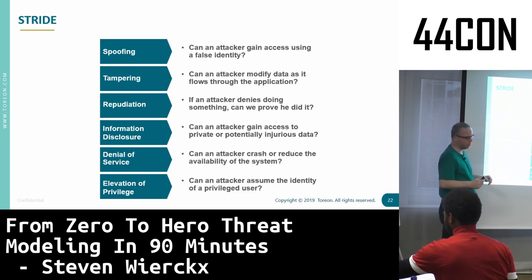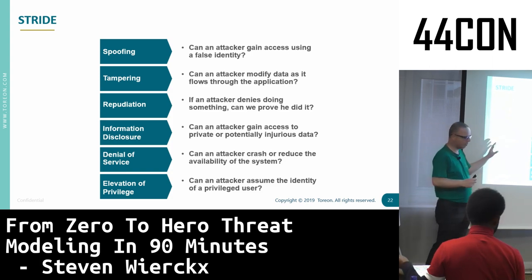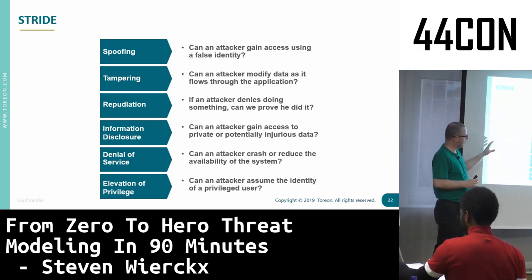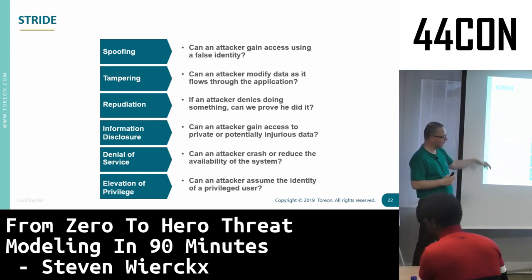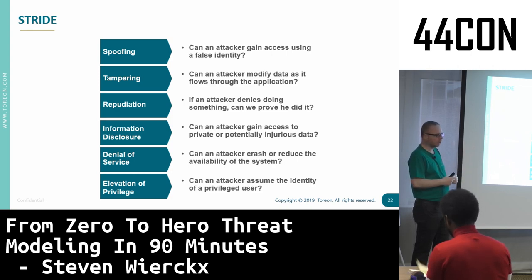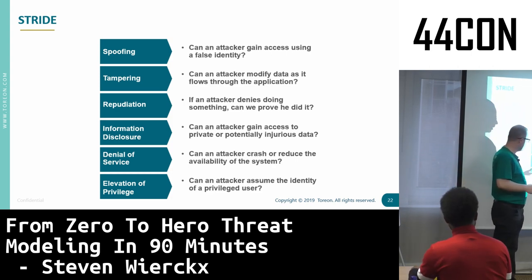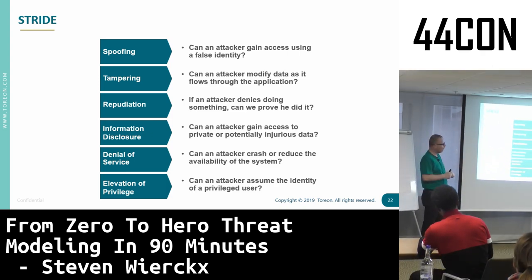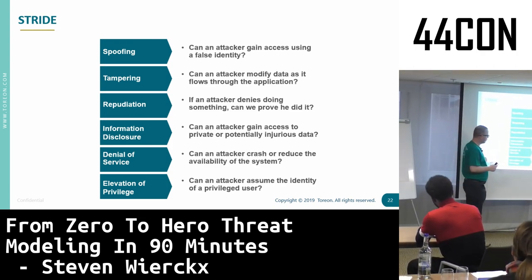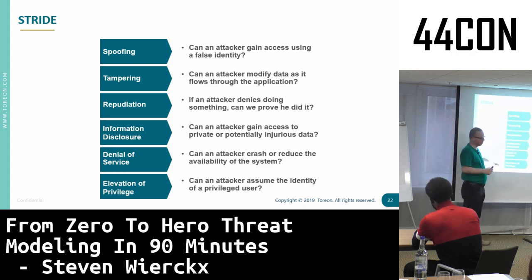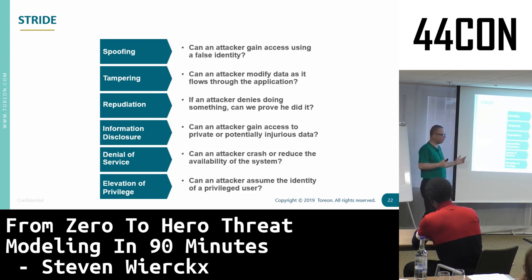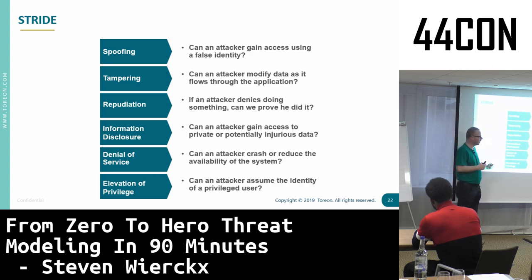They decided that when you need to make a list of all the potential threats, it helps if there is some kind of a mnemonic to help you think about them. So here are six question categories to help you think about threats. The first question people usually have is: what if there is a threat that doesn't fit into any of these? Well, if you thought about it, you just put it down somewhere — you found a threat, and now somebody needs to go and fix it or at least think about fixing it.